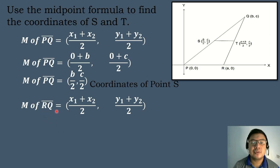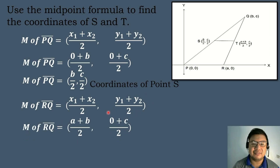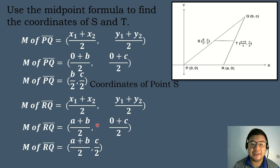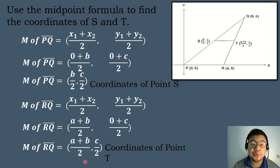Next, let's find the midpoint of segment QR using the midpoint formula: ((x₁ + x₂)/2, (y₁ + y₂)/2). Substituting the values: ((A + B)/2, (0 + C)/2) = ((A + B)/2, C/2). So the coordinates of point T are ((A + B)/2, C/2).